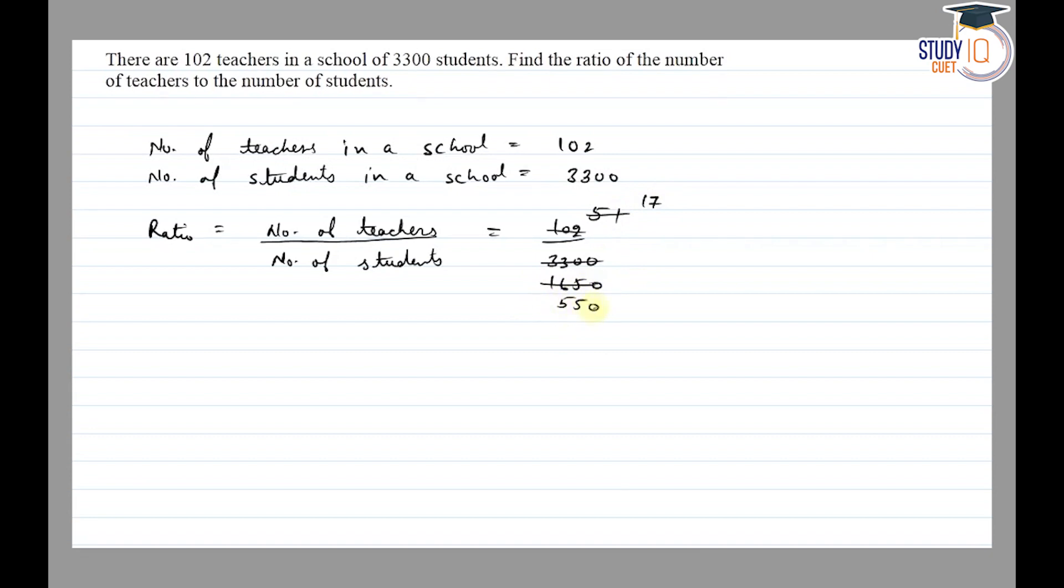3 times 5 is 15 and 0 as it is. So finally the ratio will be 17 by 550. That's our final answer, thank you.